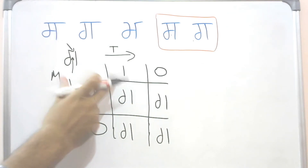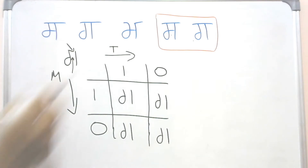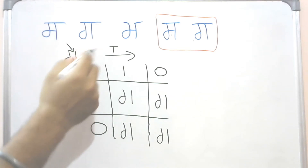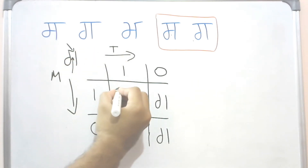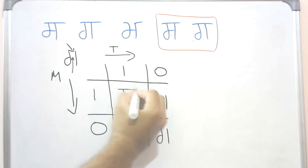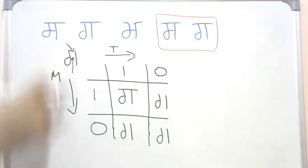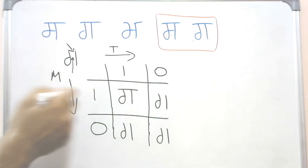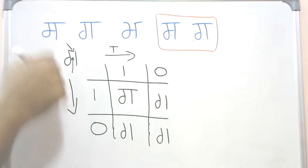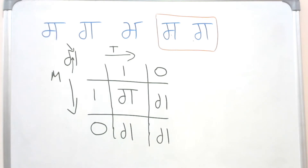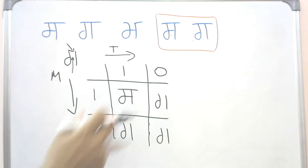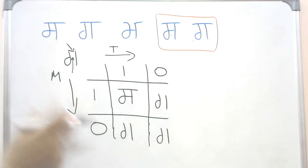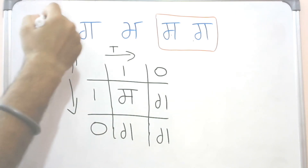In the first case, we can have a line on the top and we can also have a line in the middle. That combination will give us Sassa.